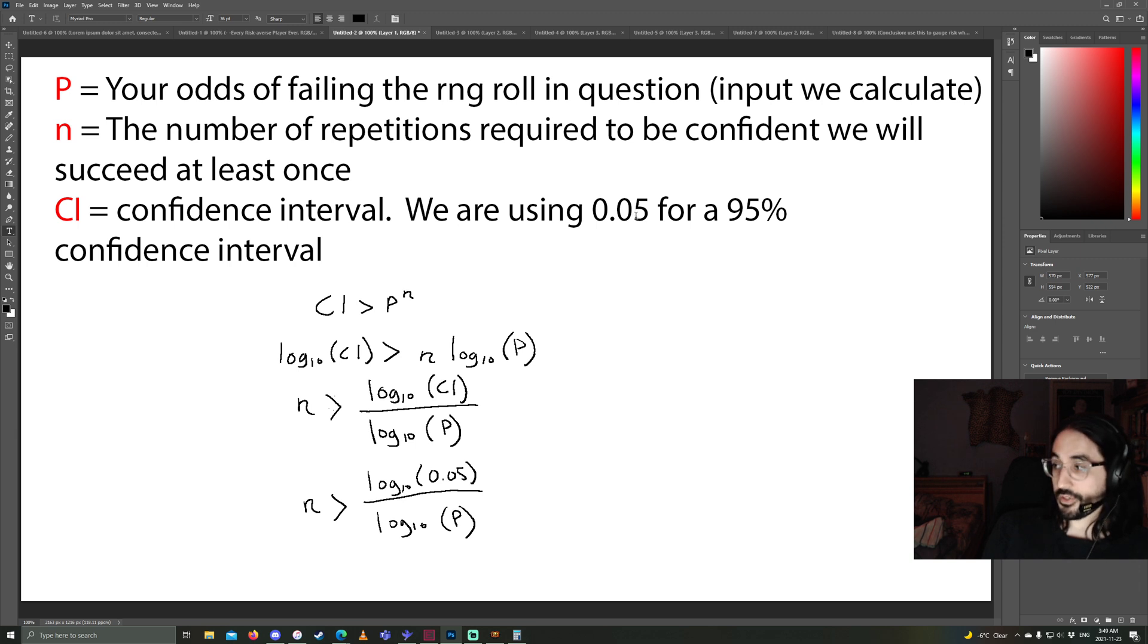Generally, 95% confidence interval is pretty standard in statistics. So we're just plugging in 0.05 there. That's just a fixed number. Technically, if you're extremely risk-averse, you could use a 99% confidence interval, and then you would change this to 0.01. But I wouldn't do that. I would just stick with what's standard. 95% confidence interval is still very, very confident.